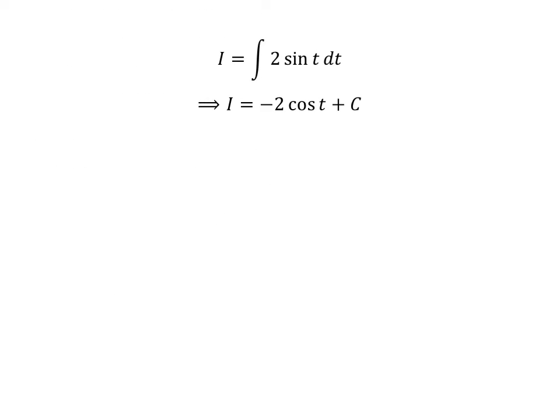We know integral of sin of t is minus cosine of t, so I is equal to minus 2 times cosine of t plus capital C. Capital C is the arbitrary constant of indefinite integral. Never forget to add this constant.